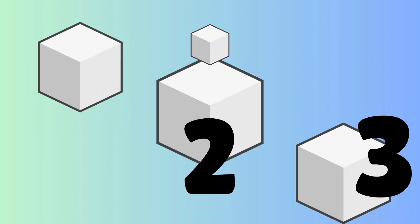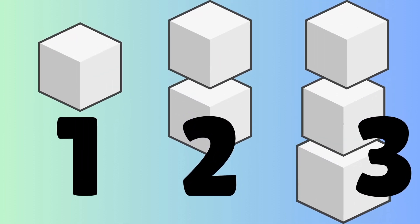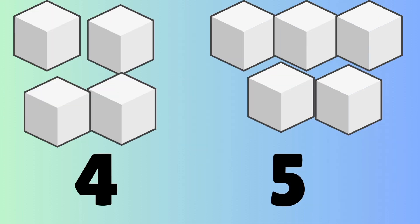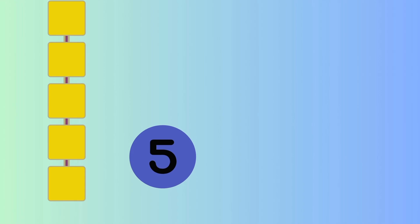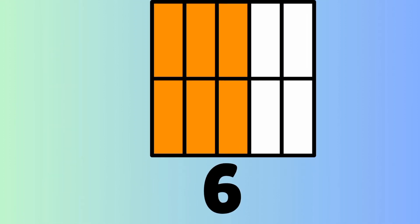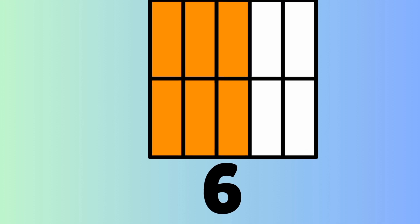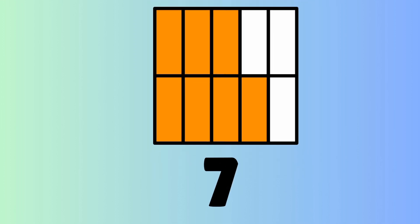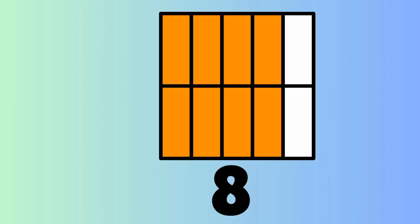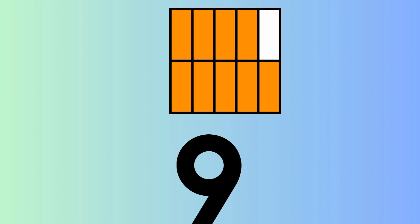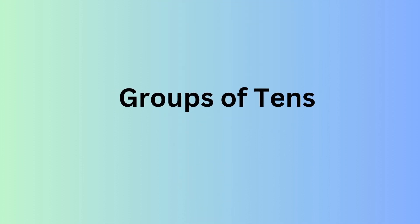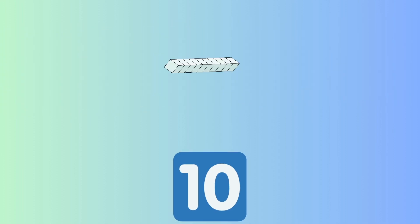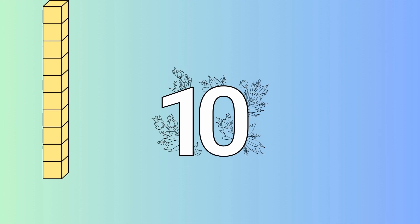Today we're going to start off by counting some cubes. One, two, and three cubes. There's four and five cubes. Here's five cubes lined up. Here's six orange rectangles in the square. Here's seven if you count them. Here's eight rectangles in the square. There's nine orange rectangles in this square. Now here are groups of ten. Here is ten cubes. Here's another ten cubes.